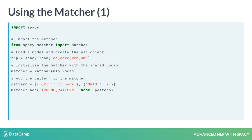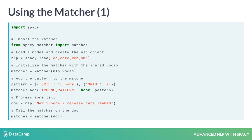The matcher.add method lets you add a pattern. The first argument is a unique ID to identify which pattern was matched. The second argument is an optional callback — we don't need one here, so we set it to None. The third argument is the pattern. To match the pattern on a text, we call the matcher on any doc.